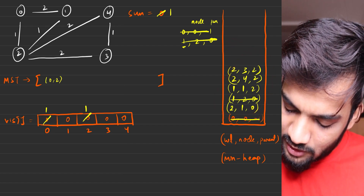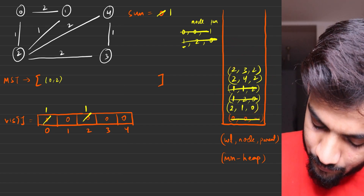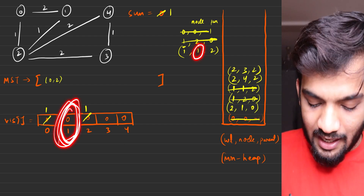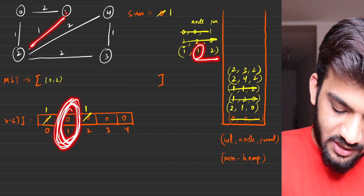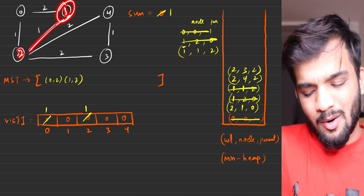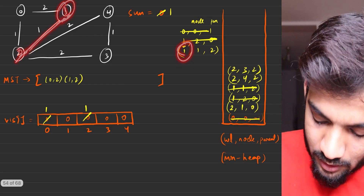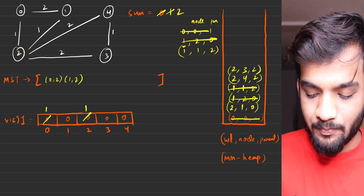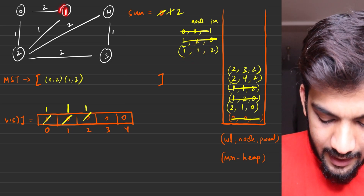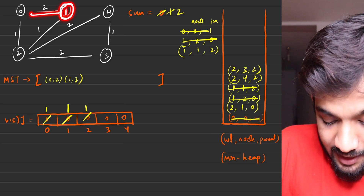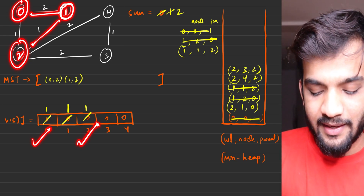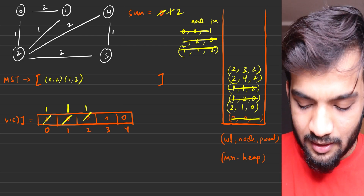Next smallest from the heap is (1, 1, 2) — edge weight 1, node 1, parent 2. Node 1 is unvisited, so edge 2-1 is part of the MST. Add weight 1 to the sum — sum becomes 2. Mark node 1 as visited. Standing at node 1, look at adjacent nodes: node 0 is visited, node 2 is visited — no other adjacent nodes, so this iteration is complete.